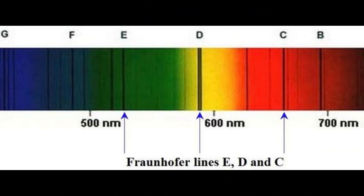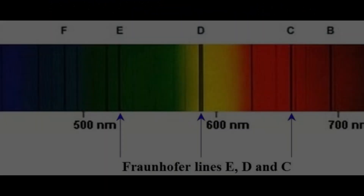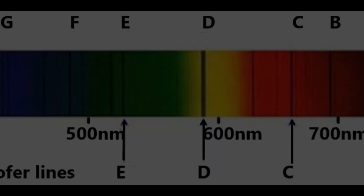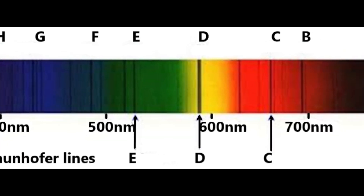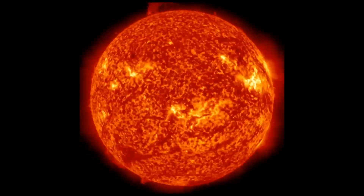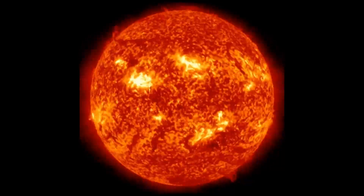The sodium D lines, which gave sodium streetlights their characteristic orange color, were one such example. This experiment demonstrated that the Fraunhofer lines were a direct consequence of the atomic composition of the Sun.